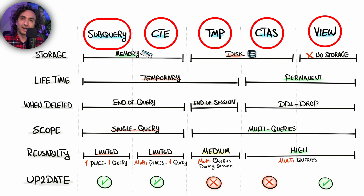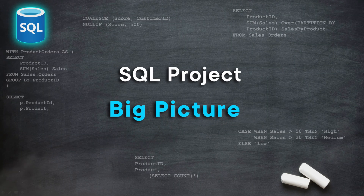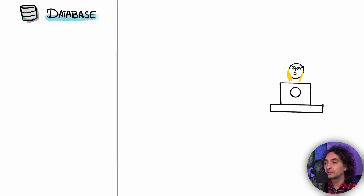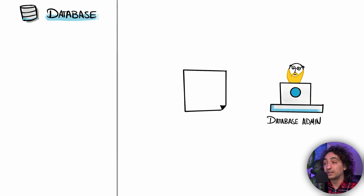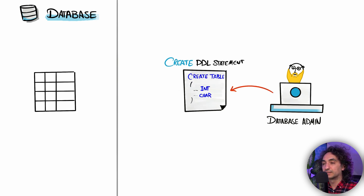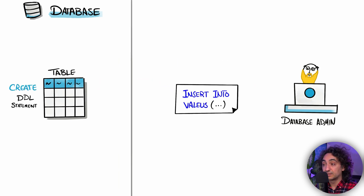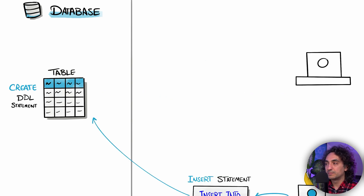Now let me show you a big picture of how things work in real projects — a story time recap of all these techniques. You have a database, and it starts with a database administrator or data engineer creating a new table from scratch using a DDL statement, creating one physical table. Then in a second step they write an INSERT statement to fill the new table with data.